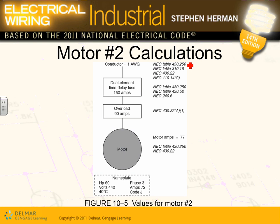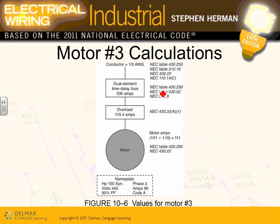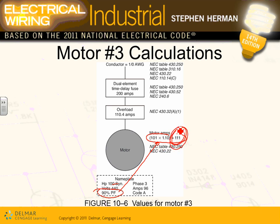For motor number one, the nameplate has all the information: from it you size the overload, the fuse from the tables, and the conductor. For motor number three — a synchronous motor with a 90% power factor — you multiply the nameplate amps by 1.10 and use that increased value for all subsequent calculations.